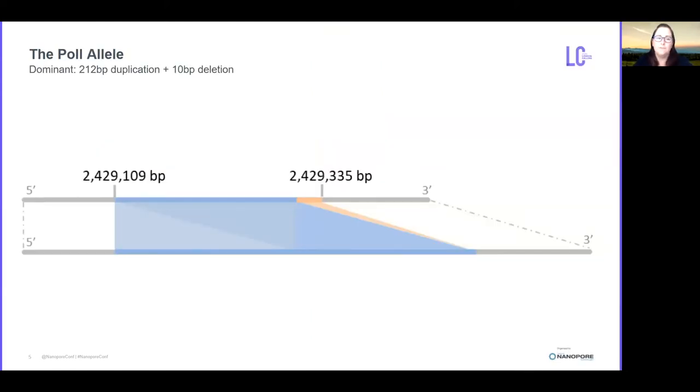The polled allele is located on chromosome one and it's known in many breeds of cattle to be a copy number variant. So the most common version of the polled allele, which is called the Celtic allele, is a 212 base pair duplication and a very small deletion next to it.